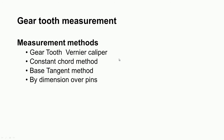A very commonly measured parameter for gears is gear tooth thickness. Gear tooth thickness can be measured by various methods: using the gear tooth vernier caliper, by the constant chord method, using the base tangent method, and by measuring the dimensions over pins.